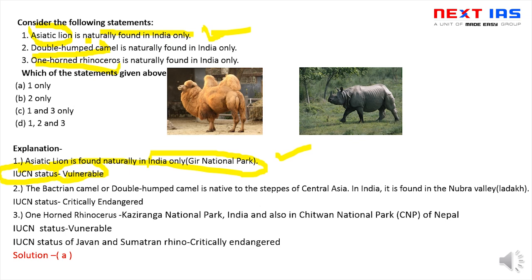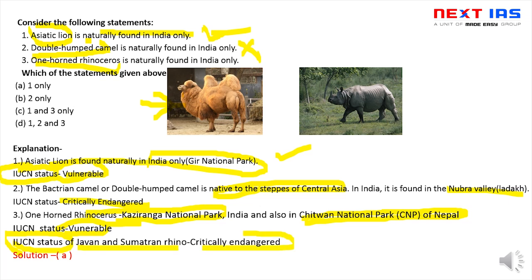Double-humped camel is naturally found in India only — यह गलत है। यह नुब्रा valley, लद्दाख में पाया जाता है, but सिर्फ India में नहीं — यह Central Asia का native है। इसका IUCN status है Critically Endangered। One-horned rhinoceros is naturally found in India only — यह भी गलत है। India में काज़ीरंगा National Park में पाया जाता है, but Chitwan National Park, Nepal में भी पाया जाता है। इसका IUCN status है Vulnerable। Javan और Sumatran rhinoceros का IUCN status है Critically Endangered। So the solution is A — only statement one is correct.